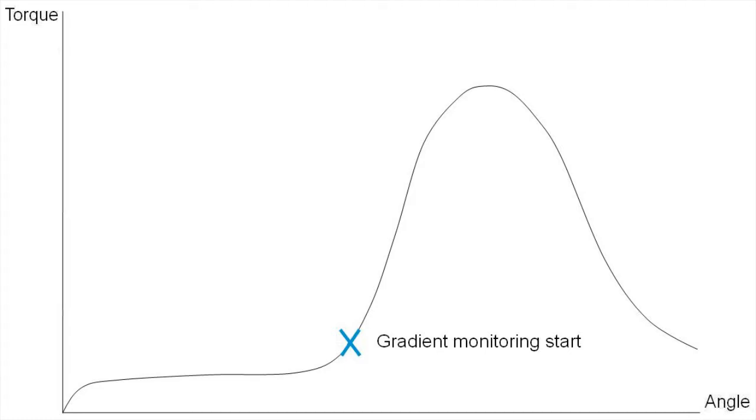Then set the joint hardness. This is an angle interval. Over each joint hardness interval, the Power Focus will monitor the increase in torque.